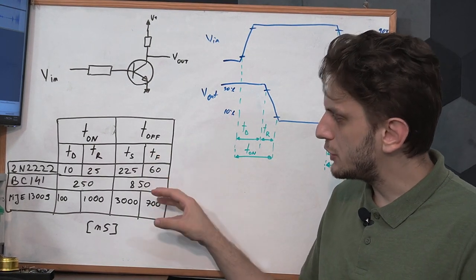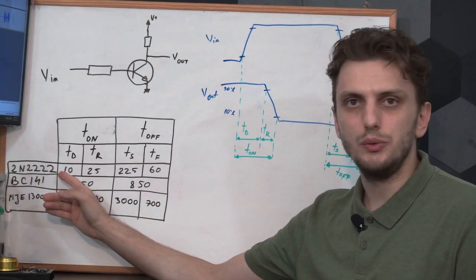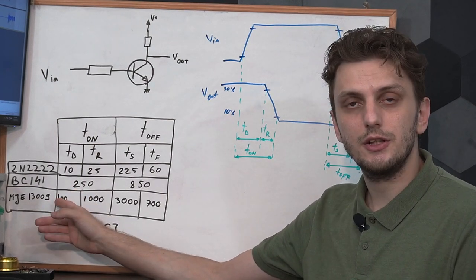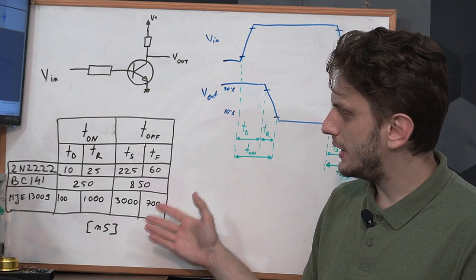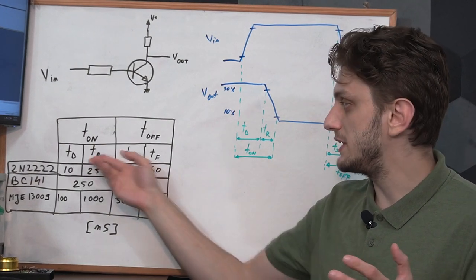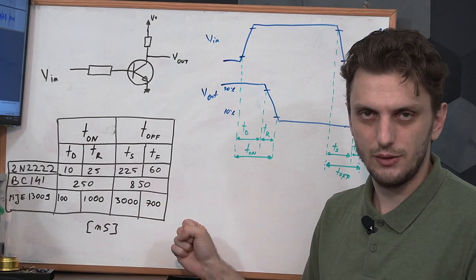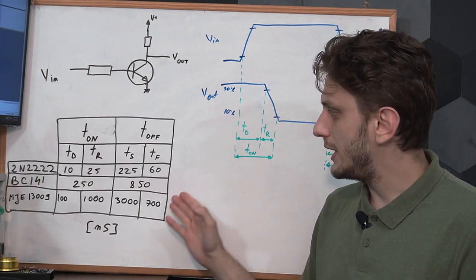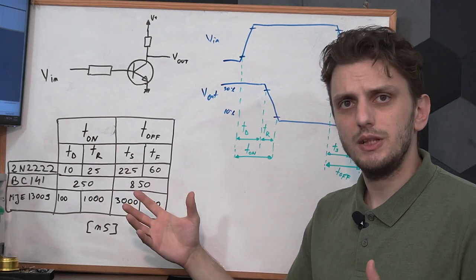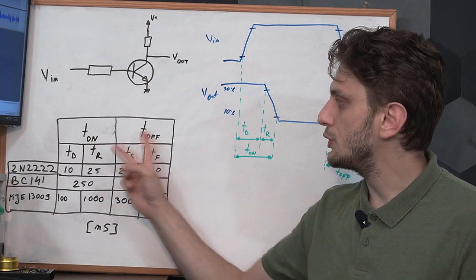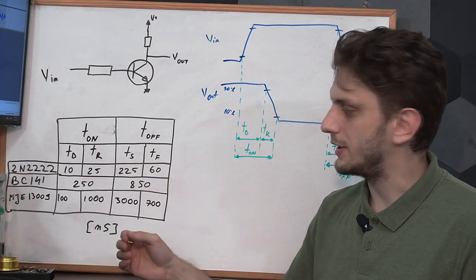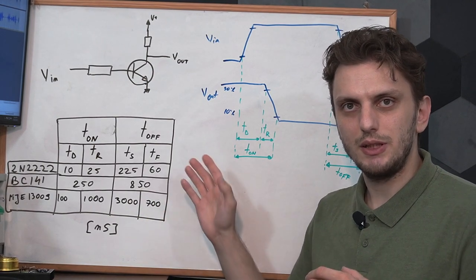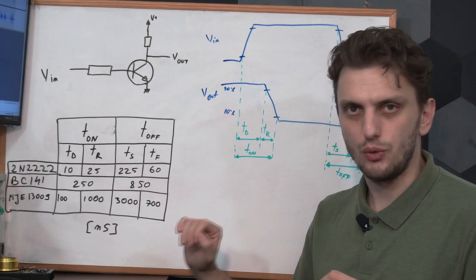Looking at actual values from some datasheets — the 2N2222, our BC141 being tested today, and the MJE13009 — you can see that switching timings vary from tens of nanoseconds to thousands of nanoseconds. So you have fast transistors and really slow transistors. In almost all cases, the off time is much bigger than the on time. Depending on the datasheet you might have all four timings or just the on time and the off time, as is the case for the BC141. But regardless, the biggest contributor — the timing that takes the most time — is the storage time.